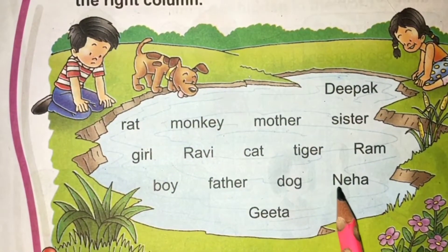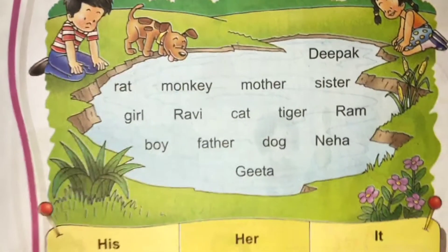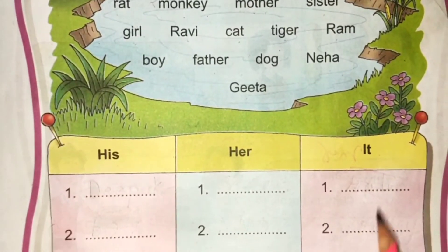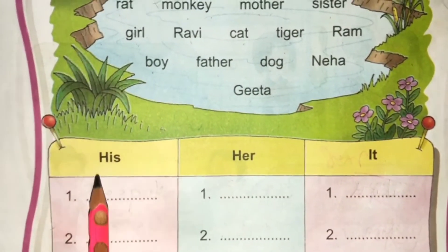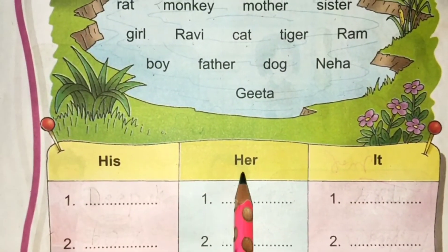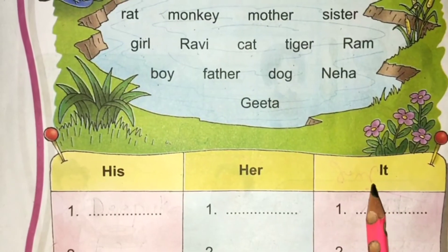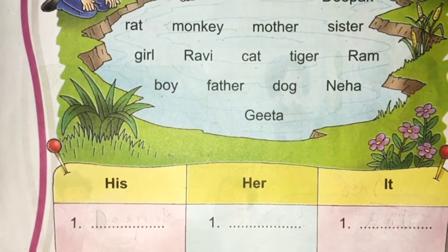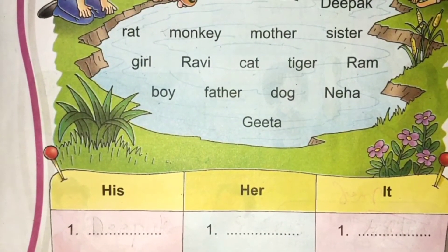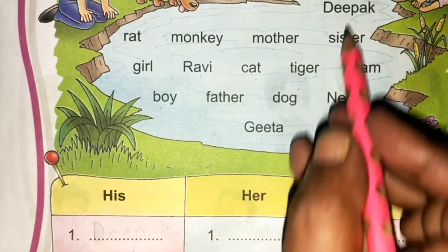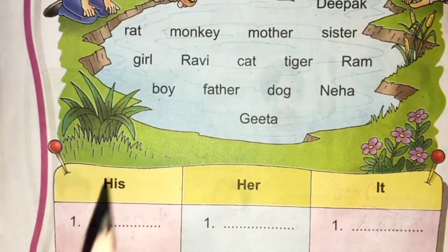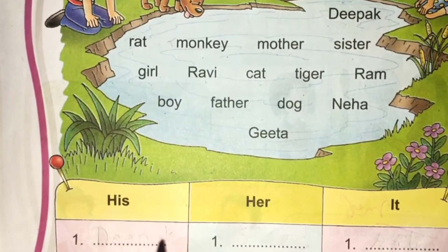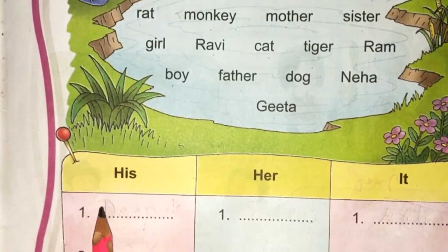We have to put a word here. We have to put three columns: he, her, it. We have to put it in the right column. The first one is Deepak. Deepak is a boy. He has to put it in the right column. This is his.